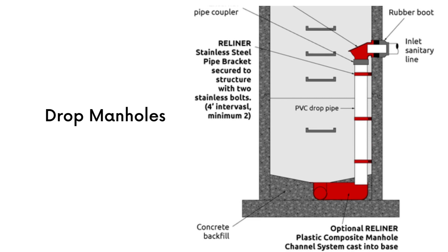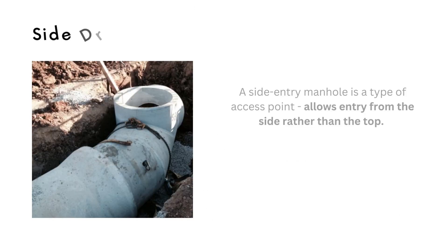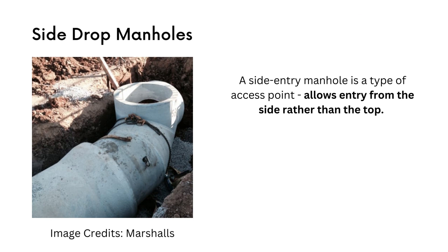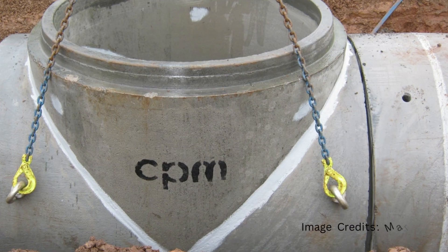Side entry manholes are constructed when direct vertical access to the sewer is not possible due to obstructions such as other sewer, gas, water, and similar lines. An access shaft is constructed in a position that is near, convenient, and off the line of the sewer direction, which is then connected to the manhole by means of a lateral passage.